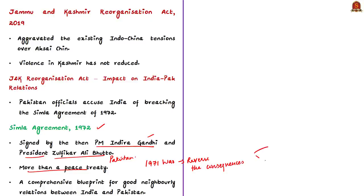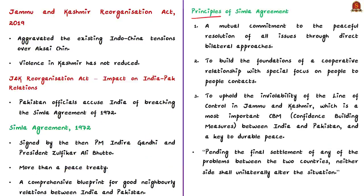The 1972 Shimla Agreement was a comprehensive blueprint for good neighbourly relations between India and Pakistan. Under this agreement, both countries undertook to renounce conflict and confrontation and to work towards the establishment of durable peace, friendship, and cooperation. Notable principles include mutual commitment to peaceful resolution of all issues through direct bilateral approaches, building foundations of a cooperative relationship with focus on people-to-people contacts, and upholding the inviolability of the Line of Control in Jammu and Kashmir — the most important confidence-building measure between the two countries. The term 'inviolability' means never to be broken or dishonored.